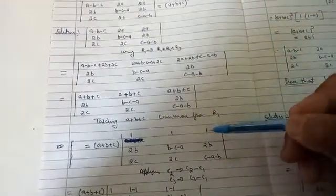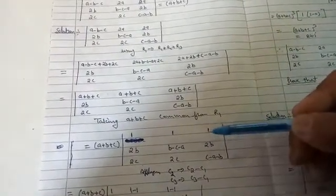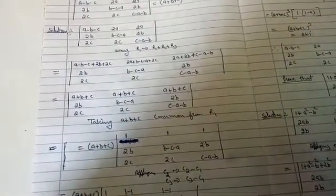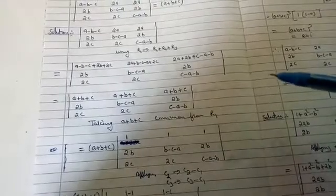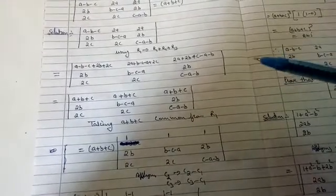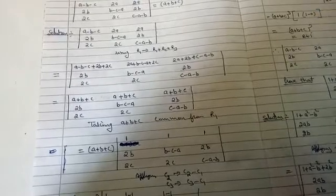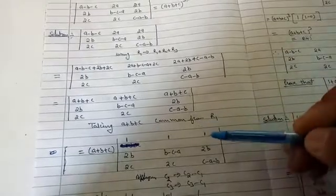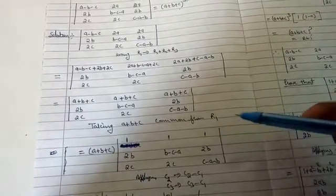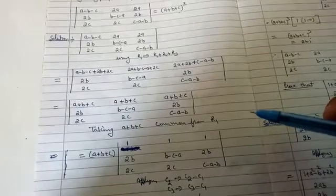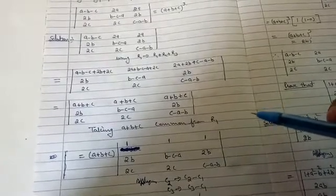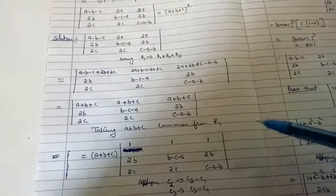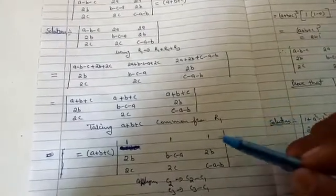When we reach the step where we got 1, 1, 1 in any row or any column, that means we are exactly near the answer. At that point, you have to make the maximum number of zeros in any row or column. But keep in mind: when applying operations on rows, one row or one column must be kept untouched — meaning you must not do any operation on it.